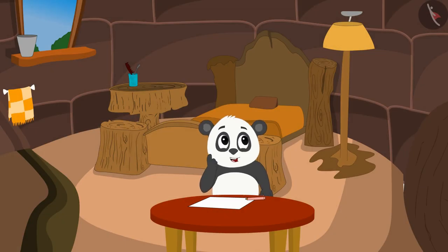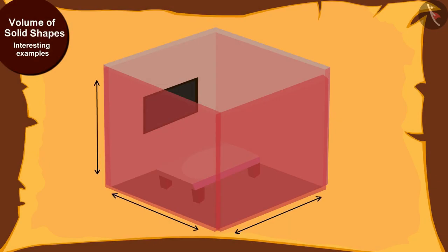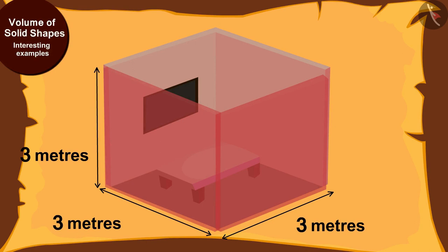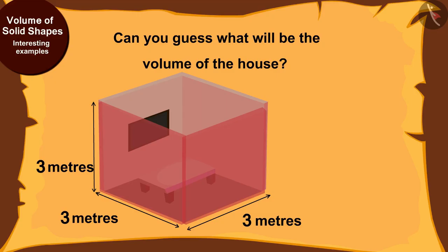To make each house unique, I will make it cube shaped. The sides of each house will be 3 meters long, he thought. So kids, can you guess what will be the volume of the house? If you wish, you can stop the video and think of the answer.